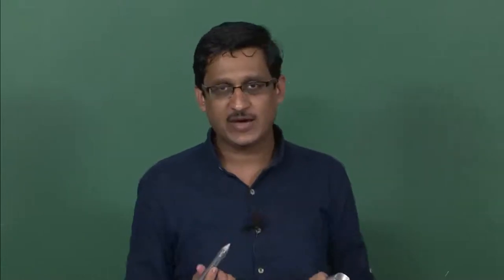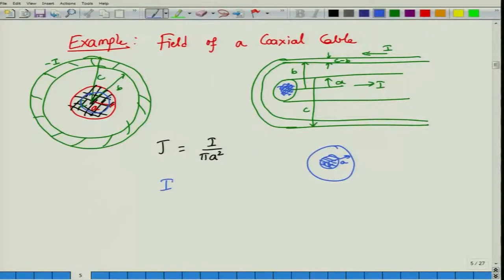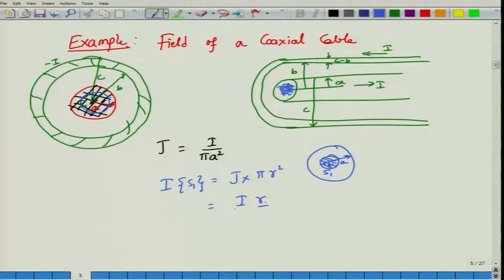The current through cross section S1 equals the current density times the area of S1, which is pi R squared. Therefore this gives I times R squared divided by A squared as the total current coming out from cross section S1, where R ranges from 0 to A. This is the right-hand side for Ampere's law.